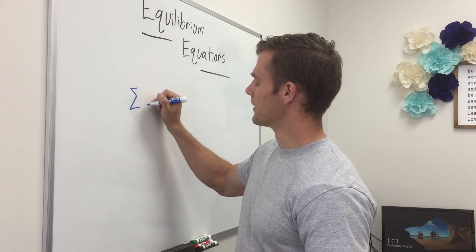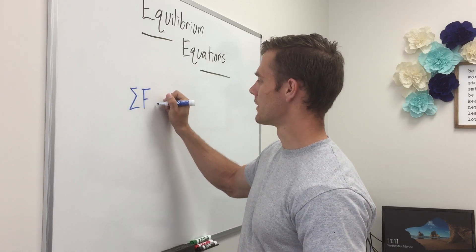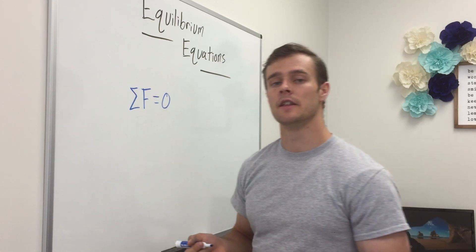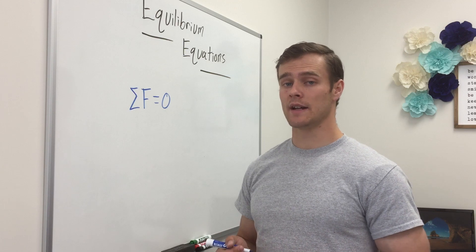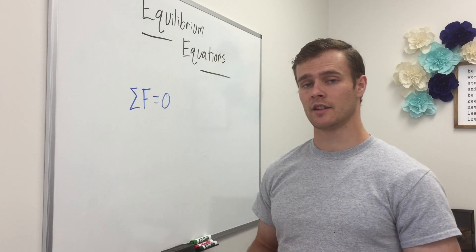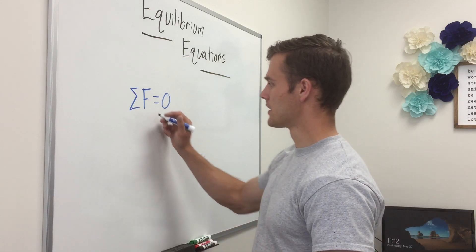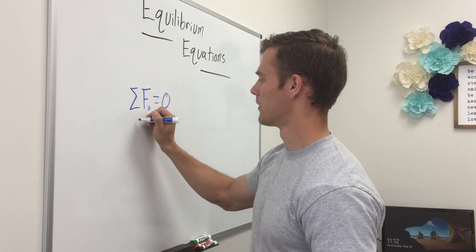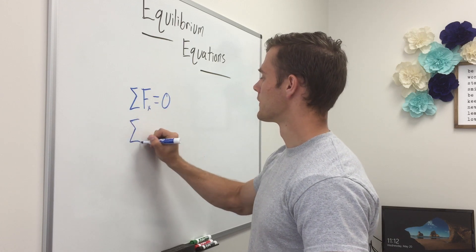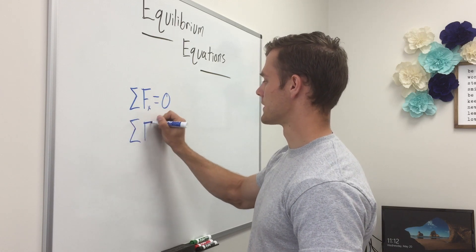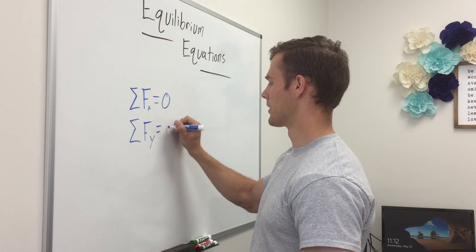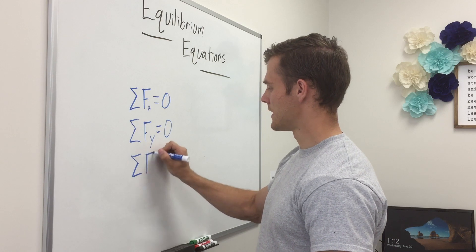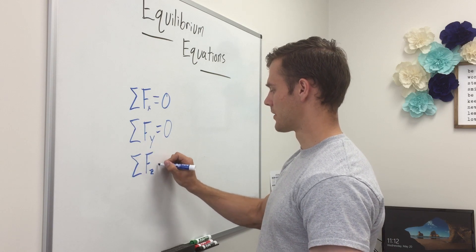An object that is in equilibrium has the sum of the forces on the object equal to zero, and that means the forces acting in the x, y, and z directions are also equal to zero. So we can say: the sum of the forces in the x direction equals zero, the sum of the forces in the y direction equals zero, and the sum of the forces in the z direction equals zero.